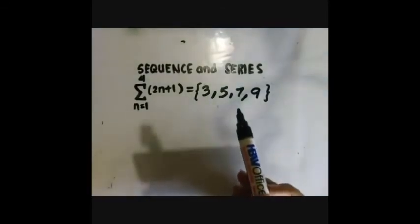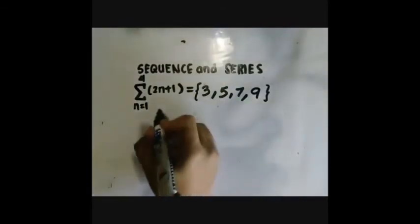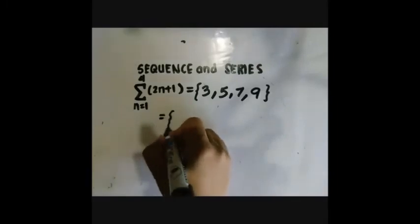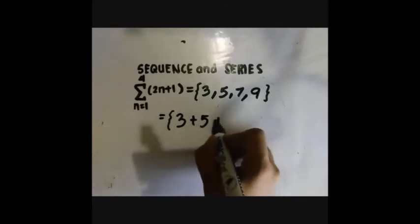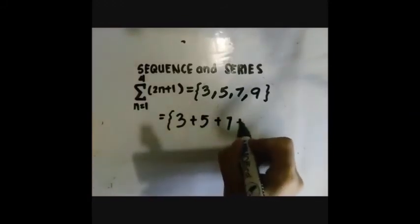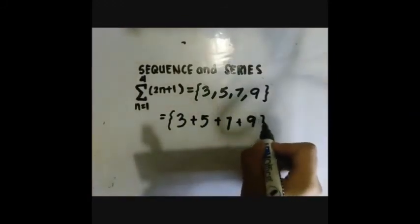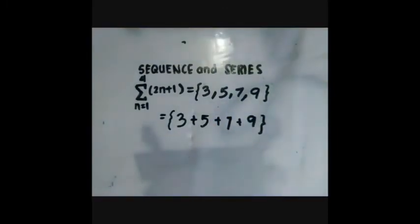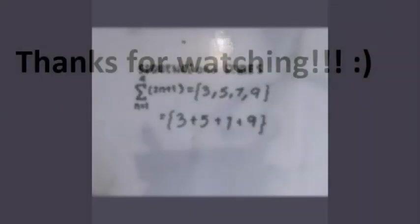What I have here now is a sequence of numbers. Now let's write it in the form of a series. We just need to write it as 3 plus 5 plus 7 plus 9. Now I have here a sequence and a series.